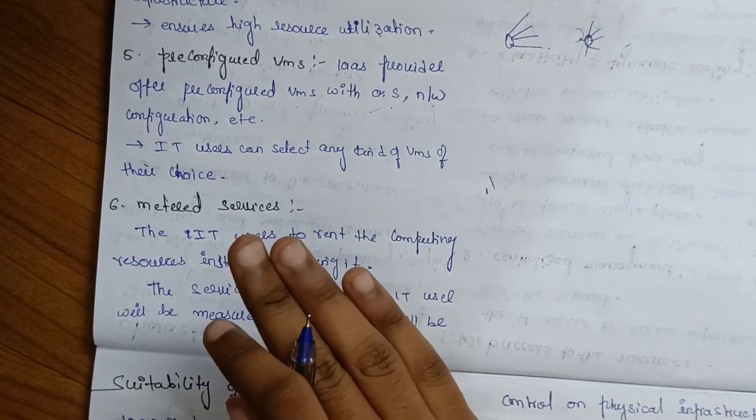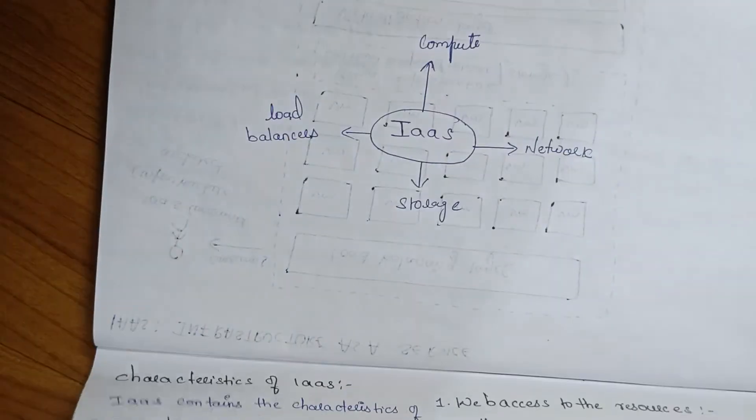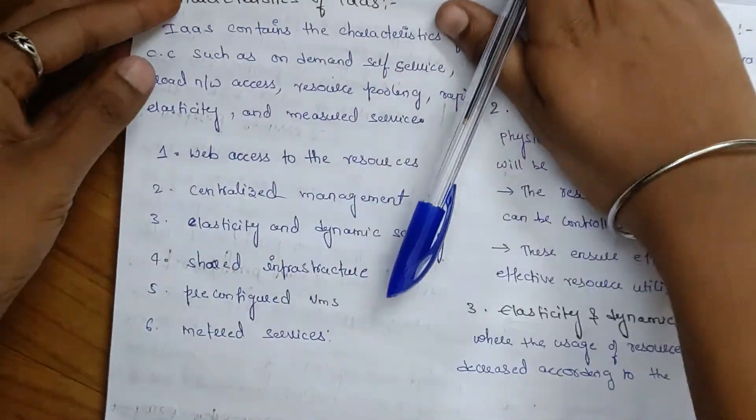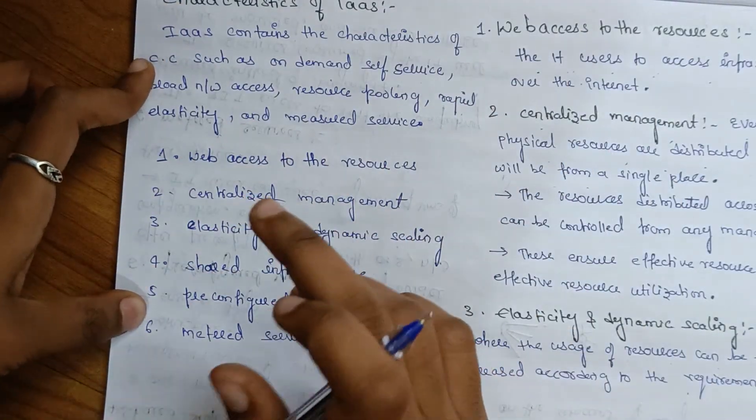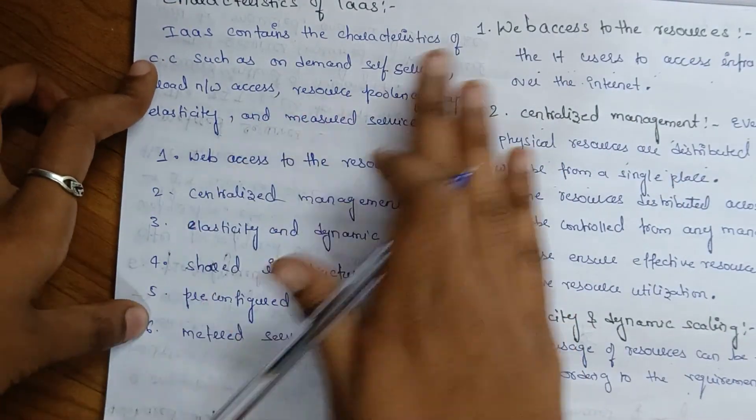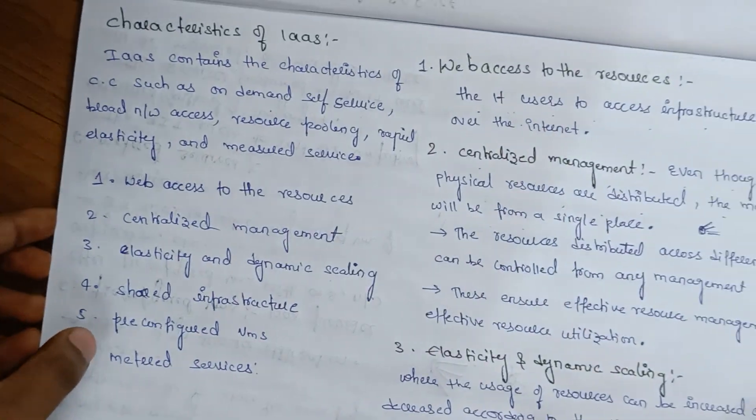So these are the characteristics. We have six characteristics of IaaS. You should know these characteristics. You can write about these characteristics in your exams.